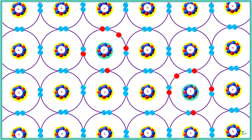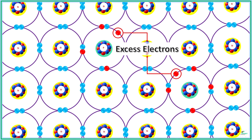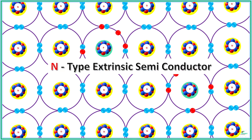When a pentavalent impurity such as phosphorus, having five valence electrons, is added to a pure semiconductor such as silicon, four of its electrons bond with silicon atoms and one electron remains as an excess electron. With this excess free electron, they can easily conduct electricity. These types of extrinsic semiconductors, which have more negative charge carriers, are called N-type extrinsic semiconductors.